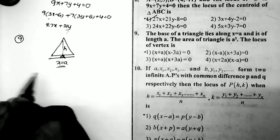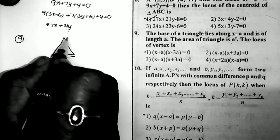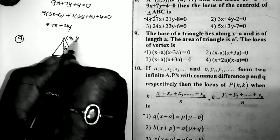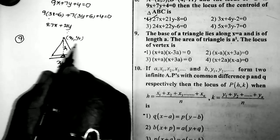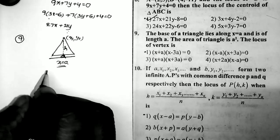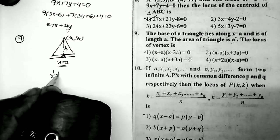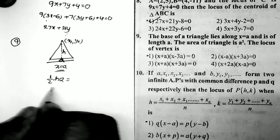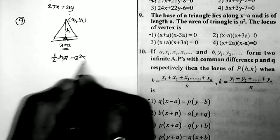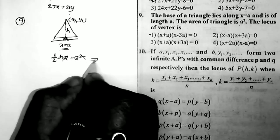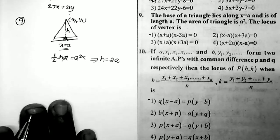Let h be the height of the triangle and (x₁, y₁) be the vertex. The area formula gives: (1/2) × base × height = (1/2) × h × a = a². From this equation, the value of h = 2a.